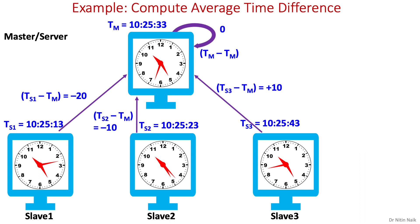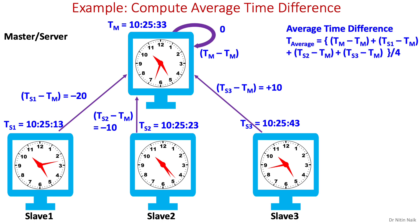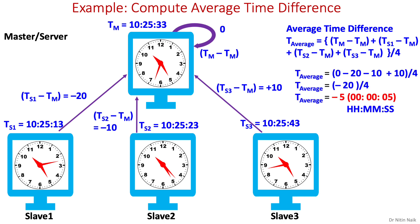In the second step, the master computes the average of all time differences including itself. The general formula is to add all time differences and divide by the total number of non-faulty clocks, which gives minus 5 seconds.